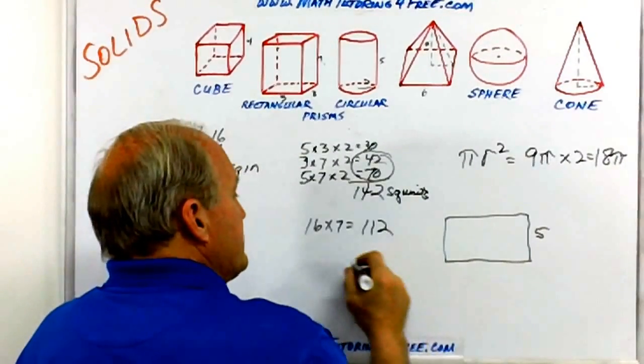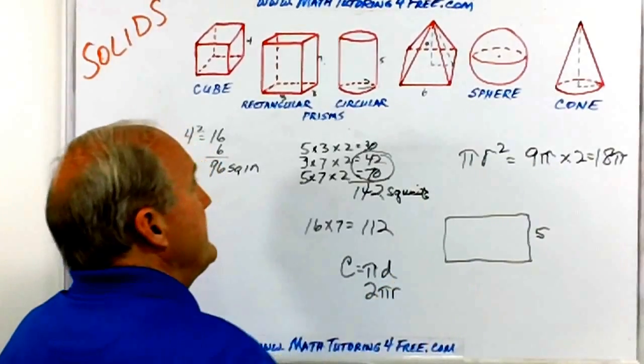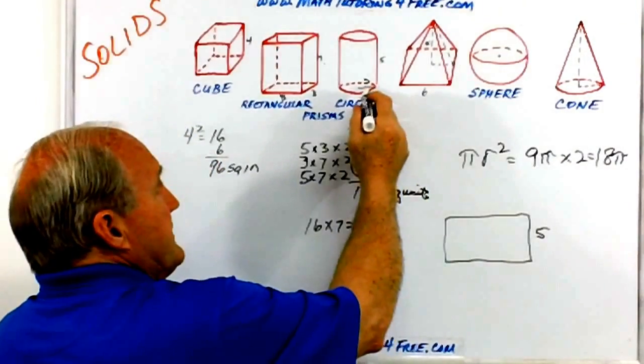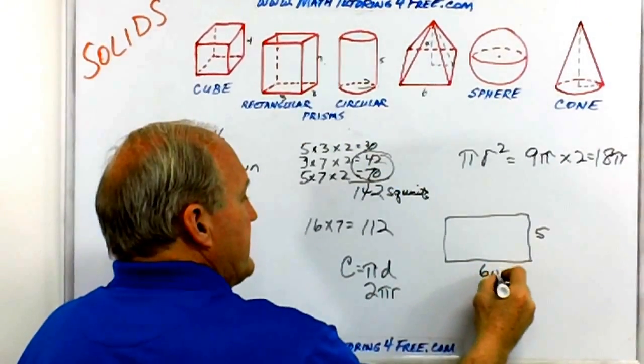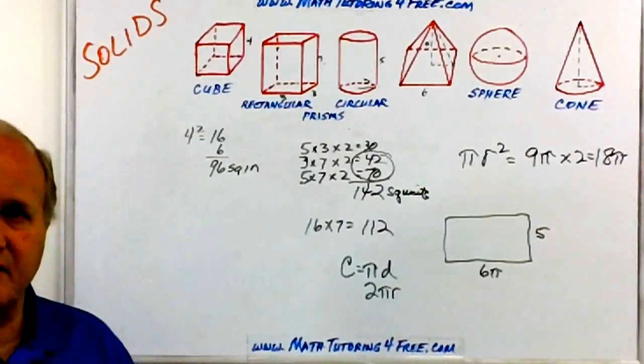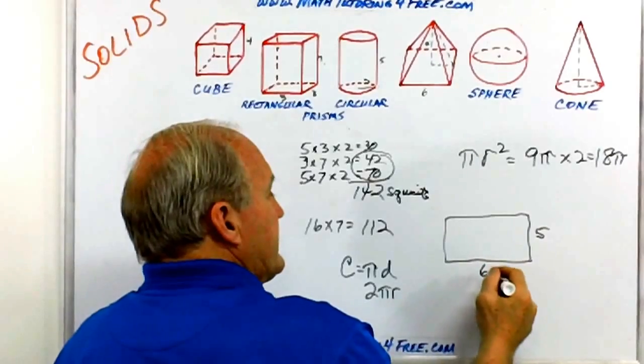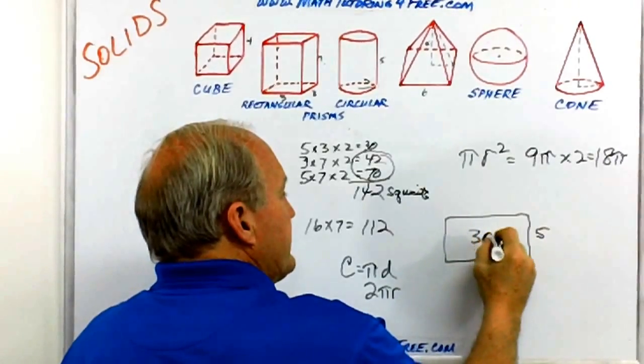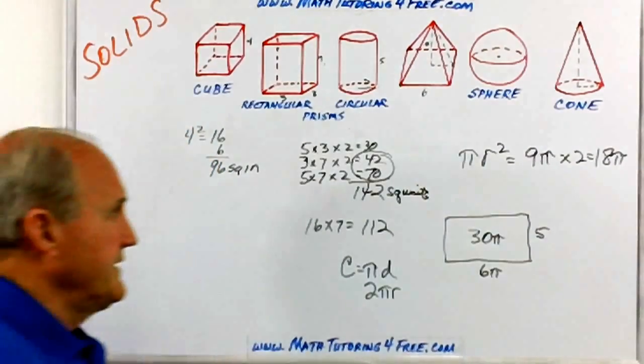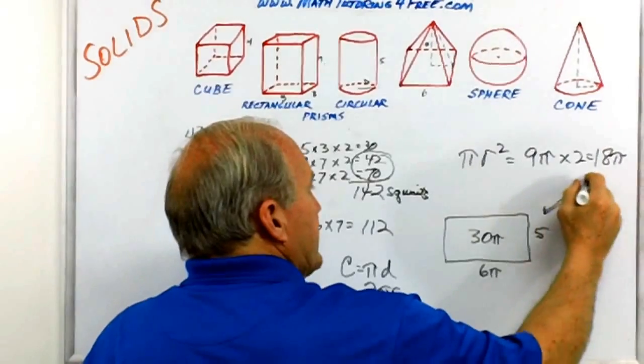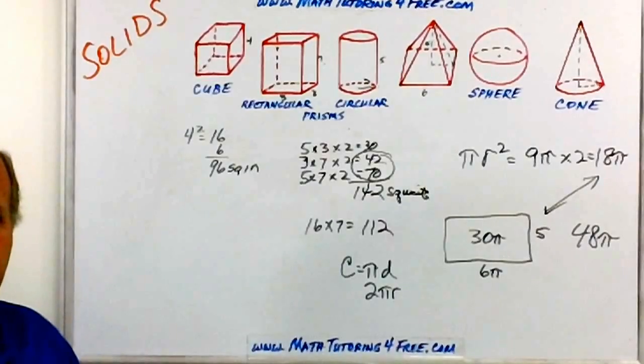The circumference is equal to pi times the diameter or two pi r. So either way you want to look at it, we have a radius of three, diameter is six. So this is going to be six pi is the length of that rectangle. The area of the rectangle, six times five is 30, so that's 30 pi. That would be the lateral area. If they're looking for the total area, then we would add these two together and the total area would be 48 pi. Okay, pretty simple.